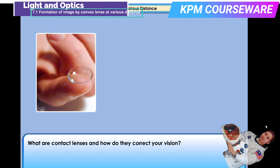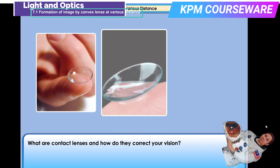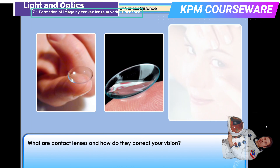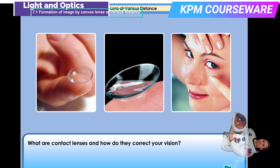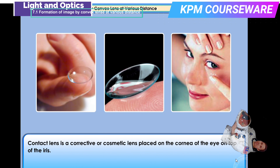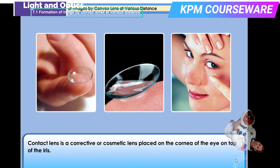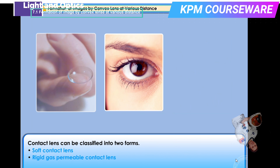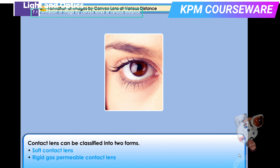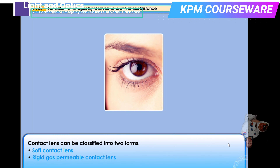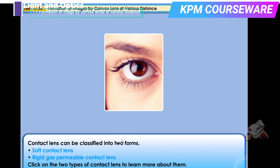What are contact lenses and how do they correct your vision? A contact lens is a corrective or cosmetic lens placed on the cornea of the eye, on top of the iris. Contact lenses can be classified into two forms: soft contact lenses and rigid gas permeable contact lenses.